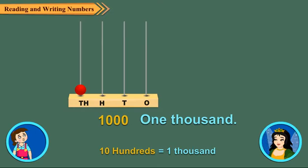So, ten hundreds is equal to one thousand. Oh! It was so easy!